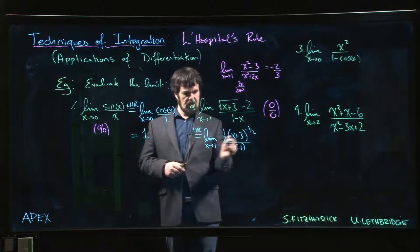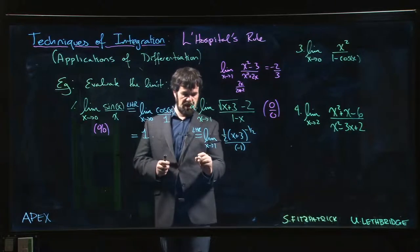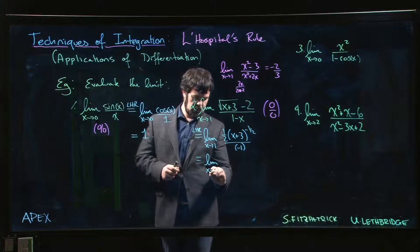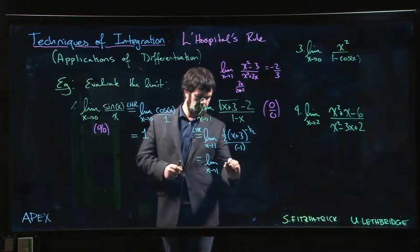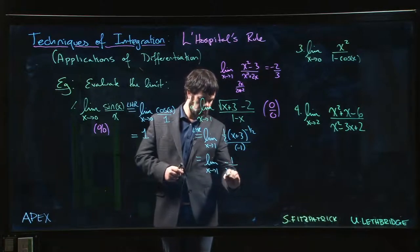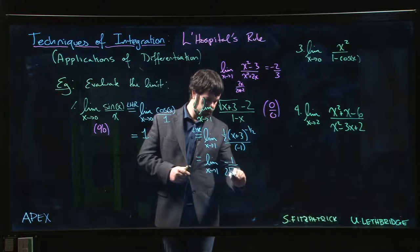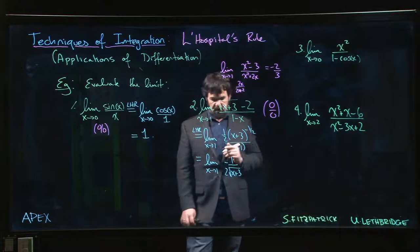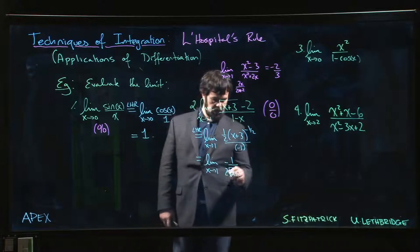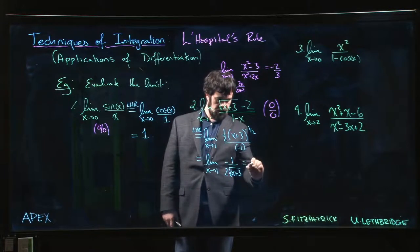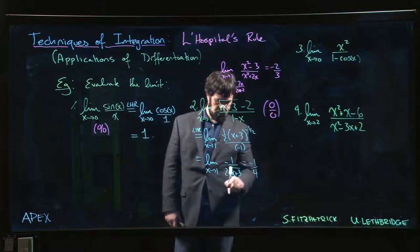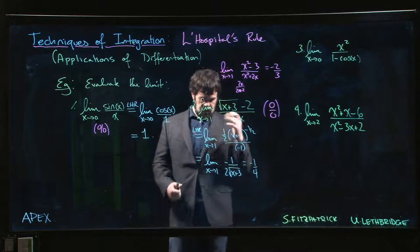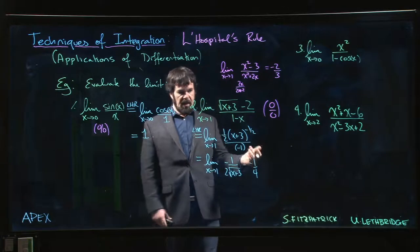Okay, maybe we want to clean that up before we evaluate. So this is going to be the limit as x going to 1 of minus 1 over 2 square root x plus 3, and we can now do this by direct substitution. So we put x equal to 1, and we get minus 1 over 4. Square root of 4 gives 2, times 2 is 4, minus 1 on top, and again we have it.